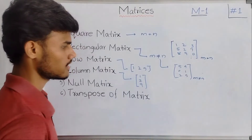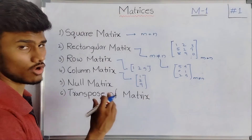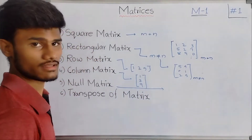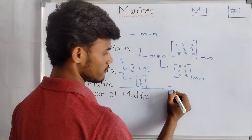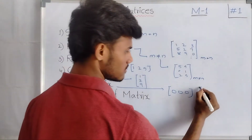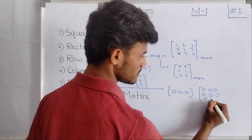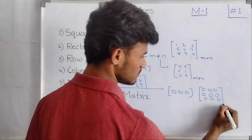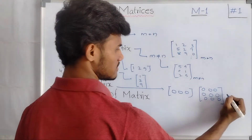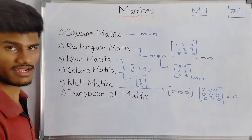Next, coming to null matrix. A null matrix is a matrix which consists of only zeroes — all elements are equal to zero. Then the matrix is called a null matrix. It is denoted by O.